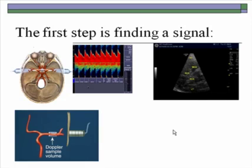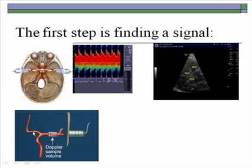The first step in doing a transcranial Doppler is finding a signal. You must insonate through the bone, determine which window you will be utilizing, and then track the intracranial vessels. Position the Doppler sample volume initially at the middle cerebral artery — it is suggested to place the sample volume at approximately where you would anticipate finding the terminal portion of the internal carotid where it bifurcates into the anterior and middle cerebral arteries, as this area is rich with vascular flow. In color flow, if you can see the inner table of the contralateral skull you know that you have an adequate signal.